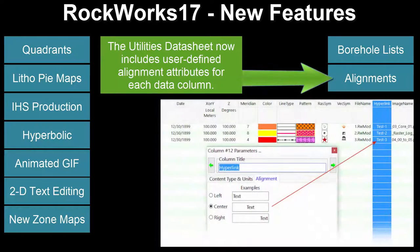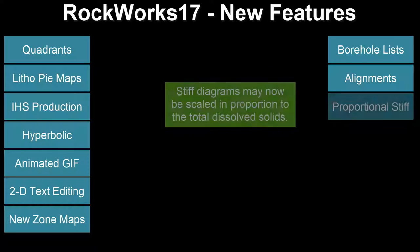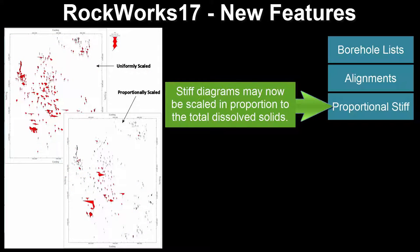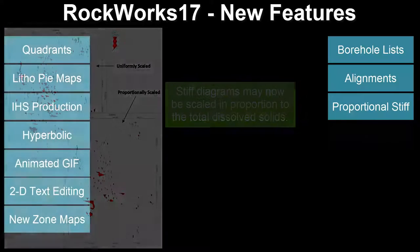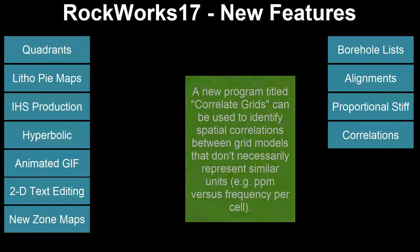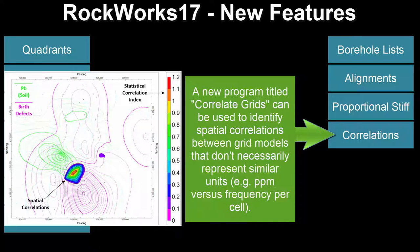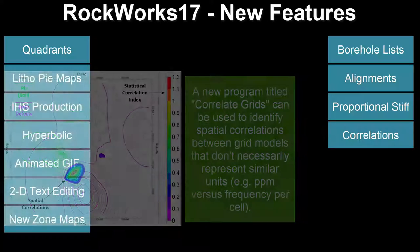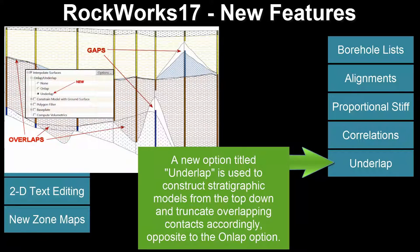The Utilities Data Sheet now includes user-defined alignment attributes for each data column. Stiff diagrams may now be scaled in proportion to the total dissolved solids. A new program titled Correlate Grids can be used to identify spatial correlations between grid models that don't necessarily represent similar units, such as parts per million versus frequency per cell. A new option titled Underlap is used to construct stratigraphic models from the top down and truncate overlapping contacts accordingly, opposite to the on-lap option.